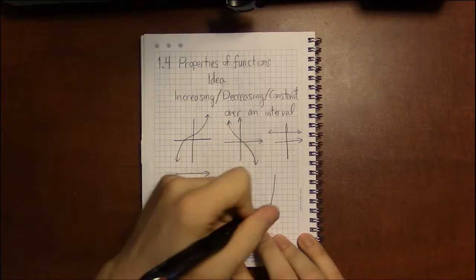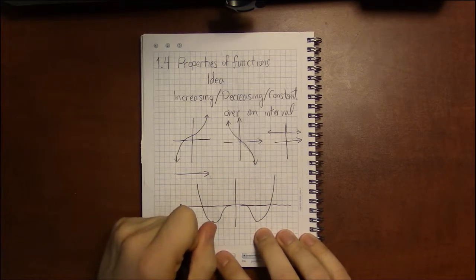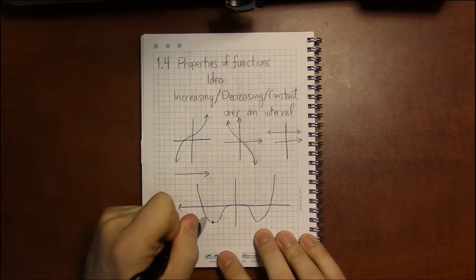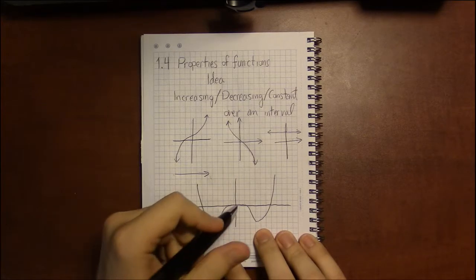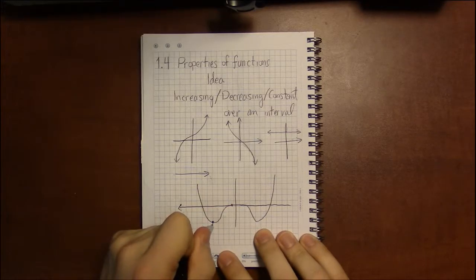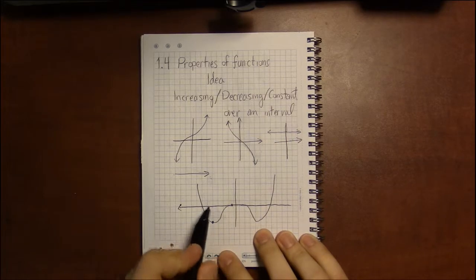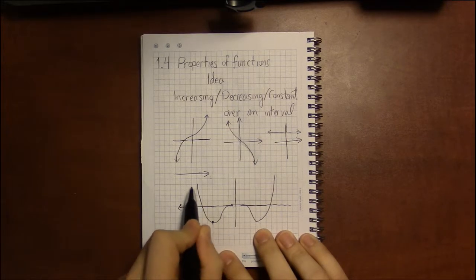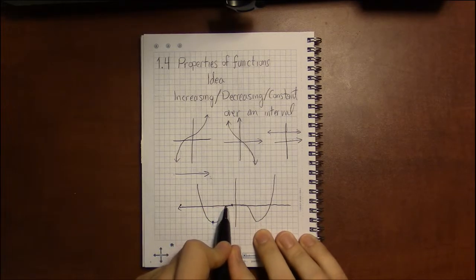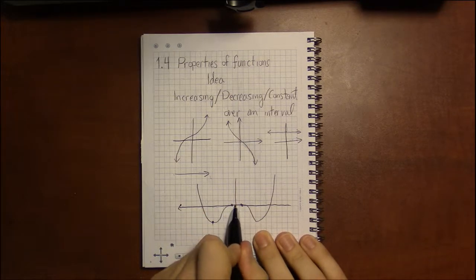We can have a function that looks a bit like this, say, where we're decreasing initially, then say increasing between two X values, between two points on the X-axis. As we're walking, we see the graph decreasing, and then at some point it stops decreasing and starts increasing until a point, and then it looks like it's constant for a while.